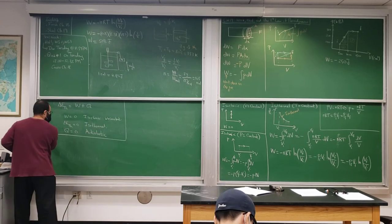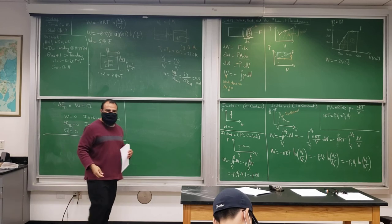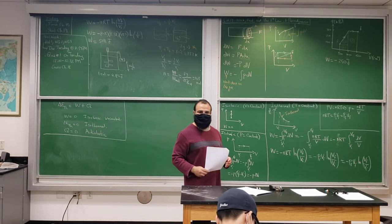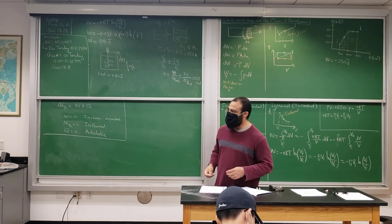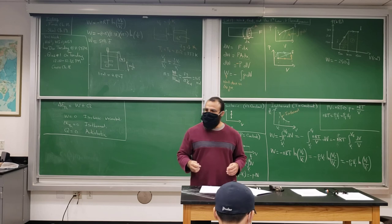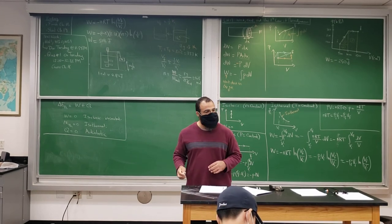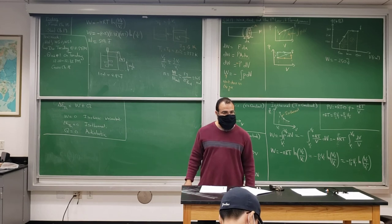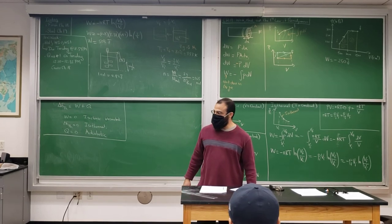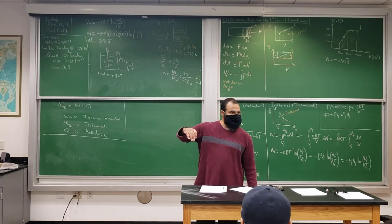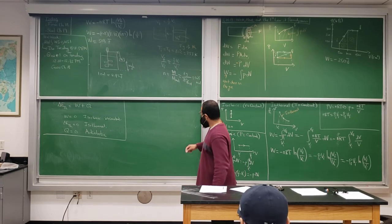We're going to talk about calorimetry — you've probably done this in chemistry. Q = mcΔT. For example, suppose you have an ice cube at minus 20°C. Ice melts at 0°C, so here is the starting point.